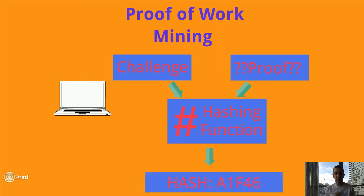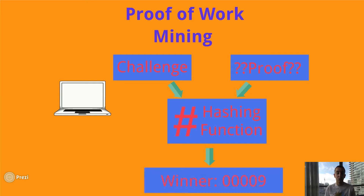To simplify, let's assume it is a 5-character hexadecimal hash, and let's assume the current difficulty requires finding a number with 4 characters at the beginning that are zeros. So we need to randomly choose a proof and run this hashing function over it until we get a hash starting with 4 zeros.